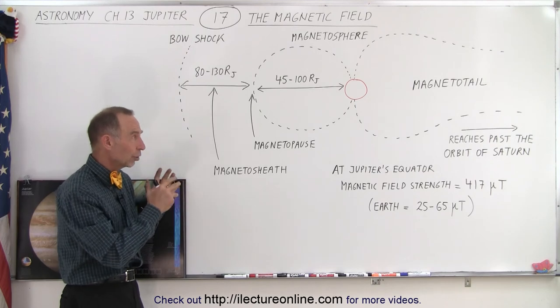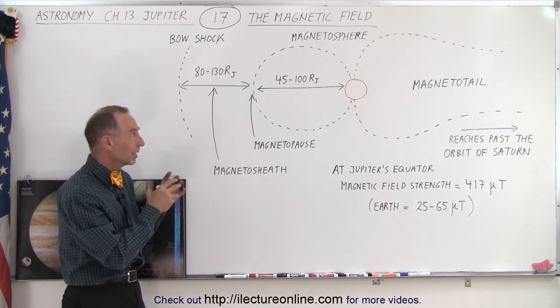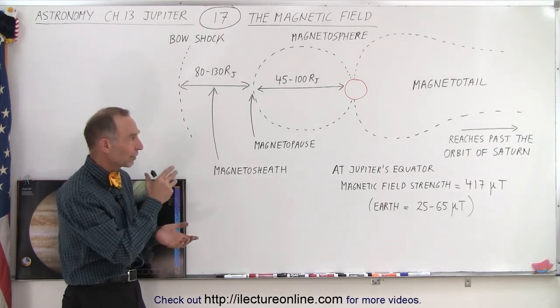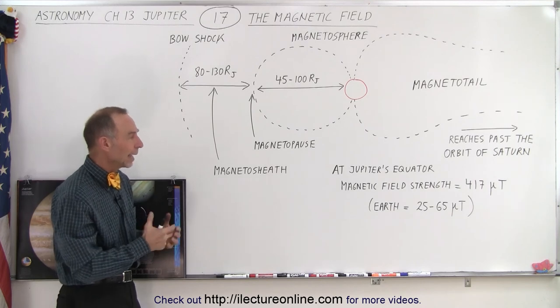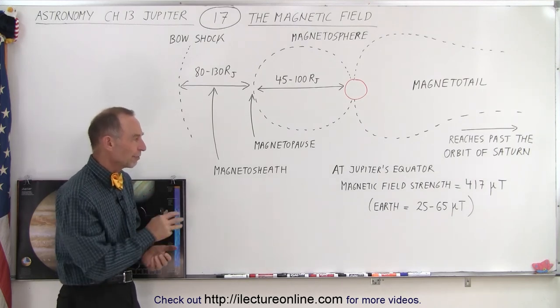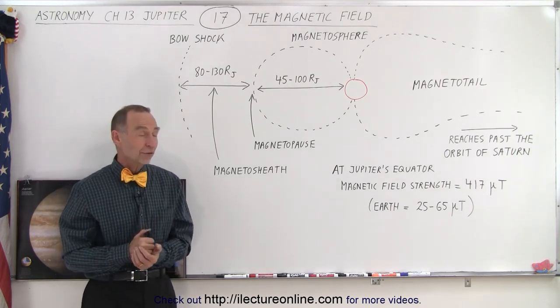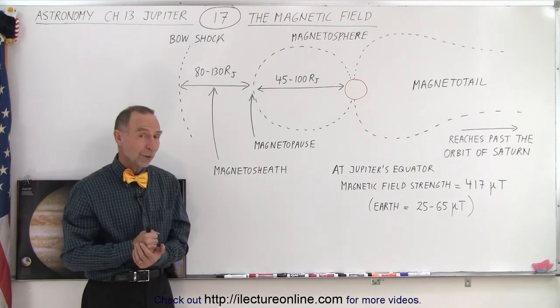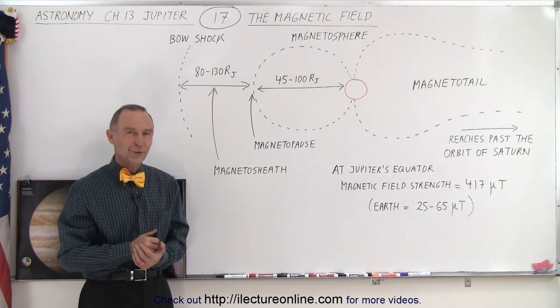It's quite unique in that respect—by far the strongest and largest magnetosphere, magnetic tail, and strength of magnetic field of all the planets in the solar system. That is one of the key features of the planet Jupiter.